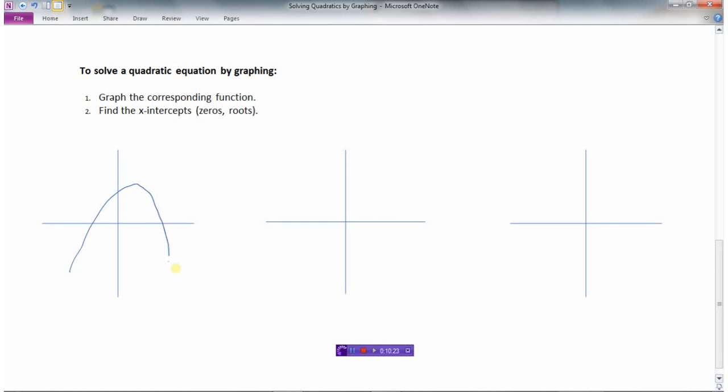A quadratic function could have one zero. Or a quadratic equation could have no zeros. Never has a value where the function is going to equal 0.